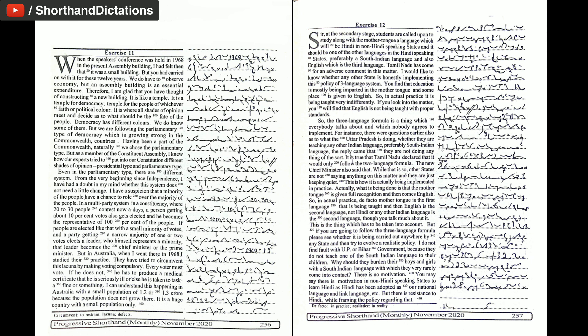If people are elected like that, with a small minority of votes and a party getting a narrow majority of one or two votes, elects a leader who himself represents a minority, that leader becomes the chief minister or the prime minister. But in Australia, when I went there in 1968, I studied their practice.